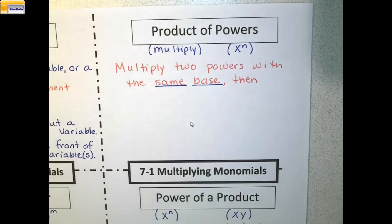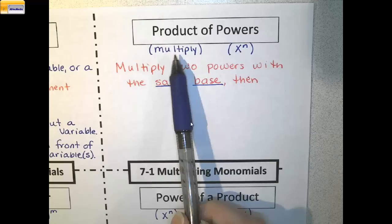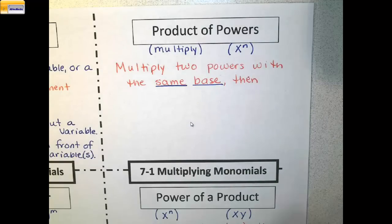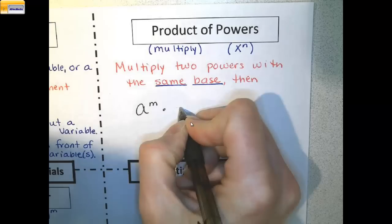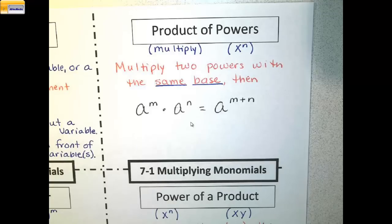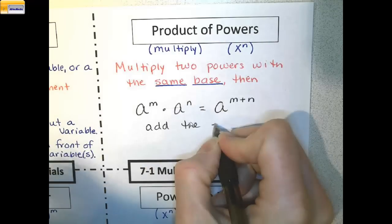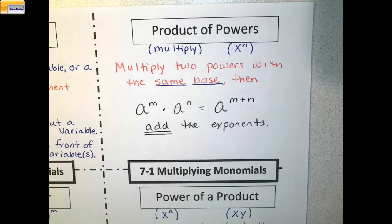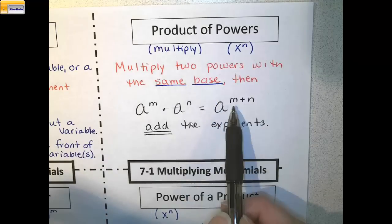We are next going to look at the product of powers. Product means to multiply, and we're starting with powers such as x to the n. If we multiply two powers with the same base — and it is very important that they must have the same base — then the rule becomes a to the m times a to the n equals a to the m plus n. In this case, we add the exponents. In our last example, power of a power, we multiply the exponents, but when we're multiplying the same bases, we add the exponents.